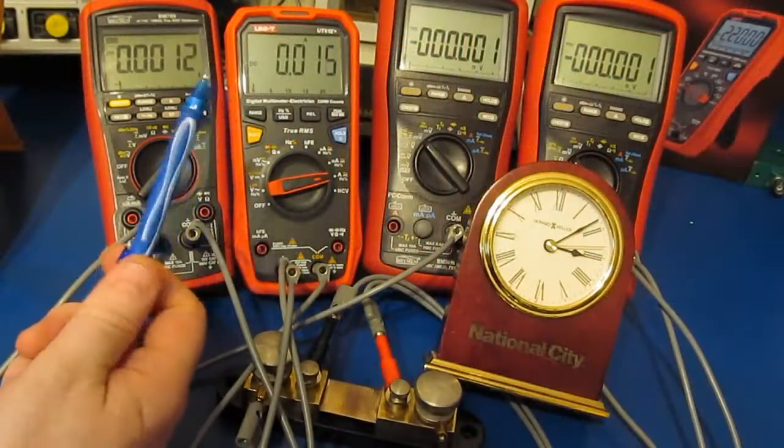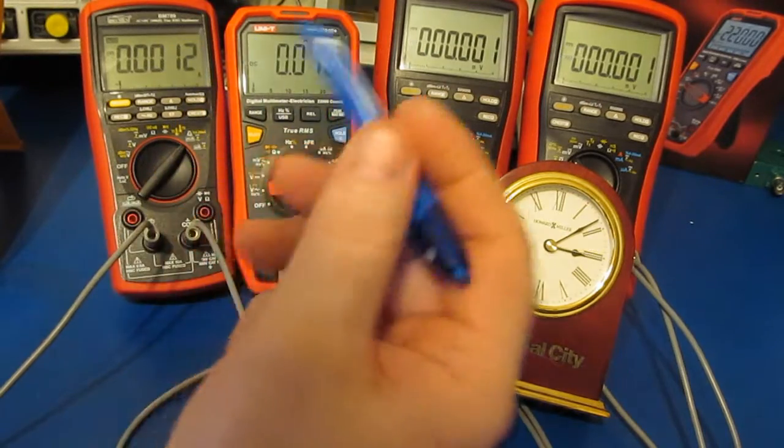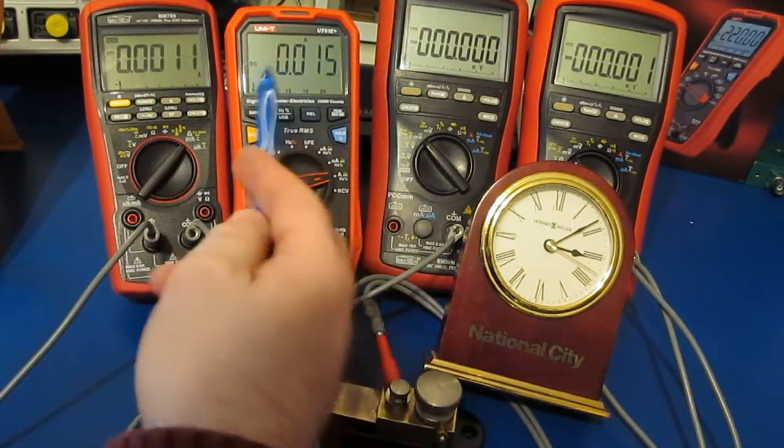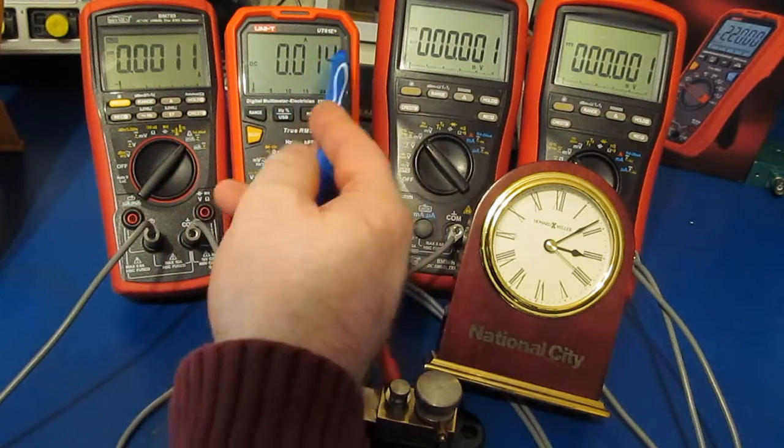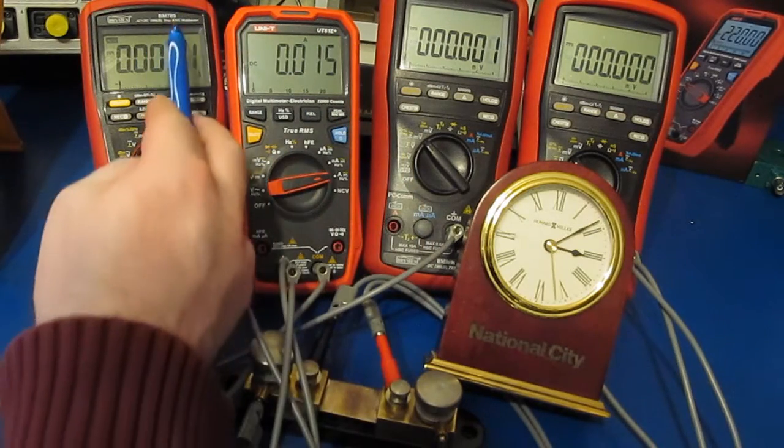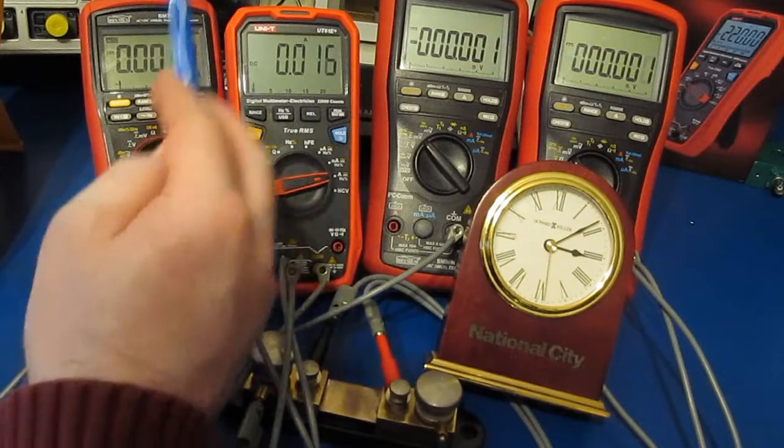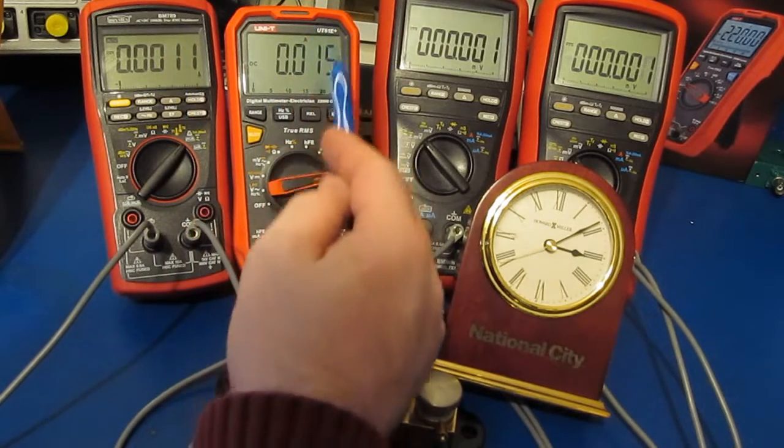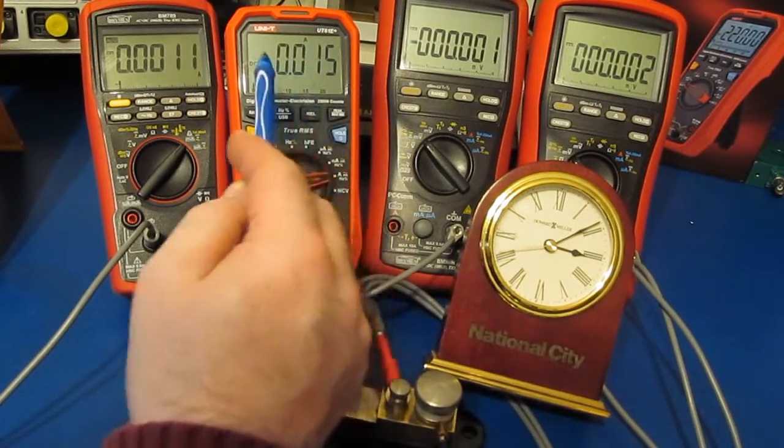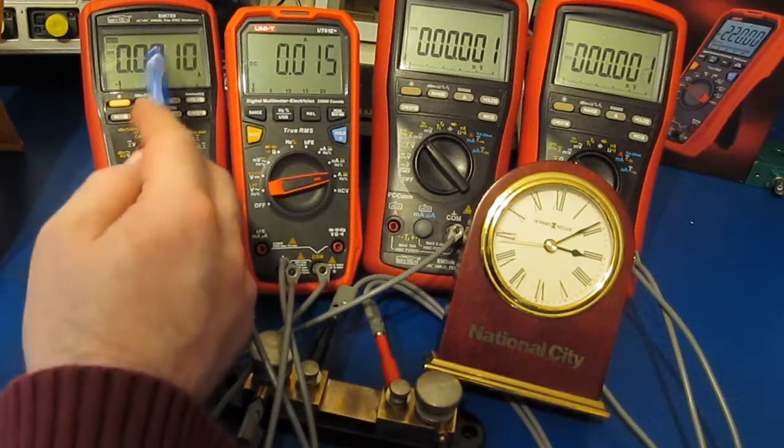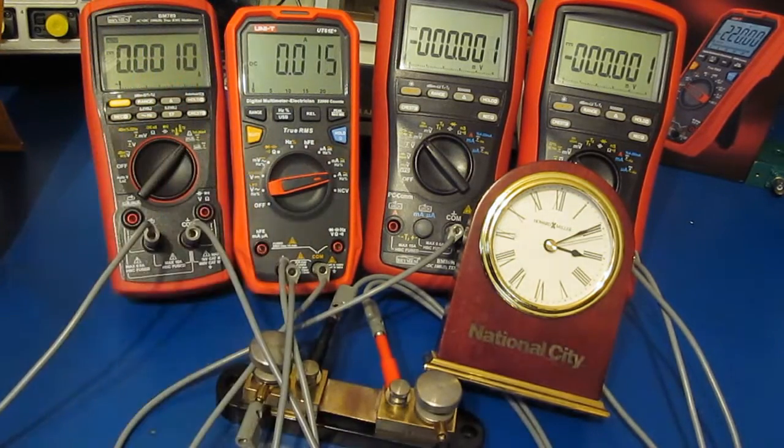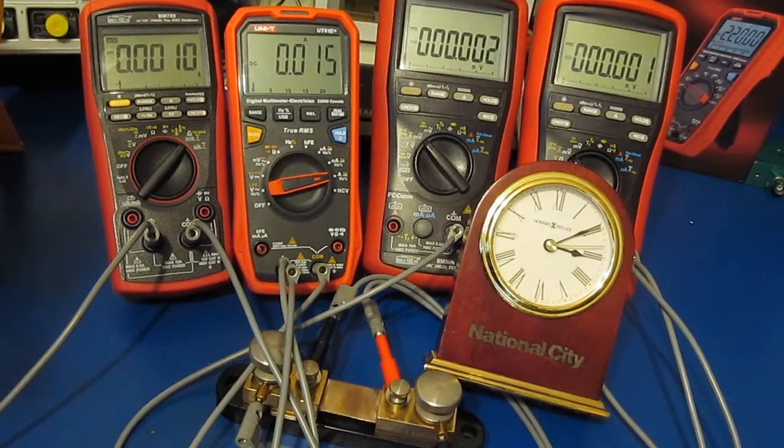One thing I should mention that I pointed out in the forums is that it's very possible that the other meters he was comparing against the UT 61E may have had a higher resolution like this Bremen BM 789. It's very possible that the UT 61E may not have the resolution to detect any kind of drift where a better meter like this 789 would.